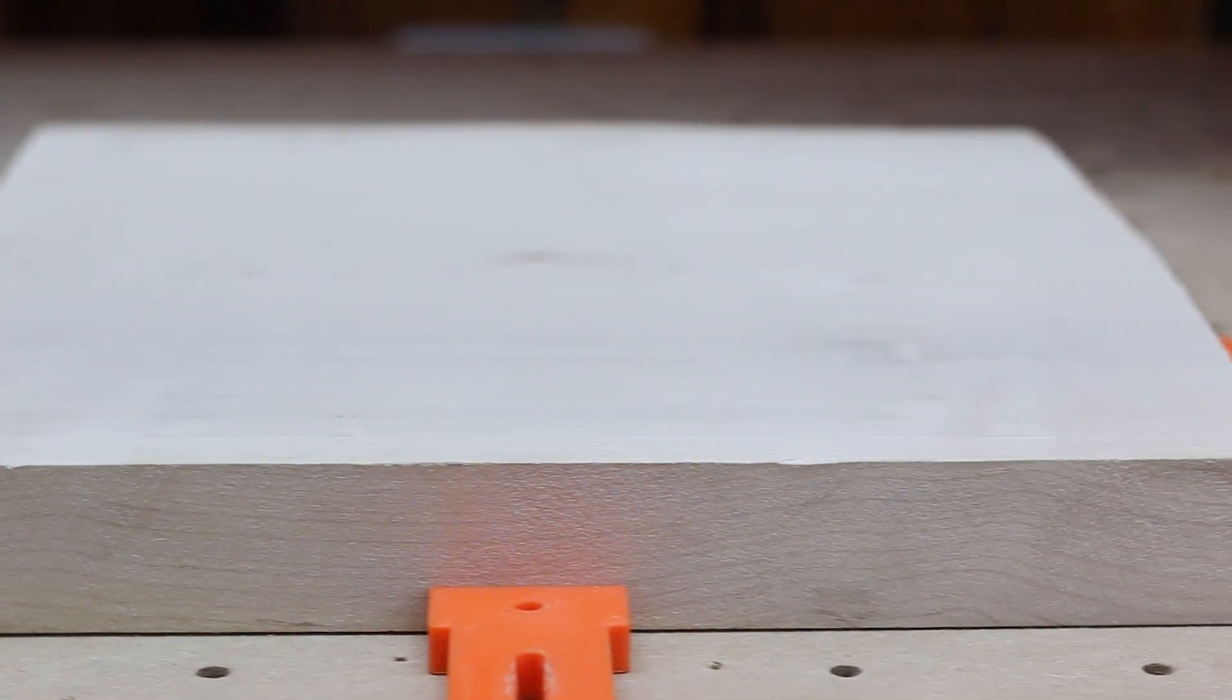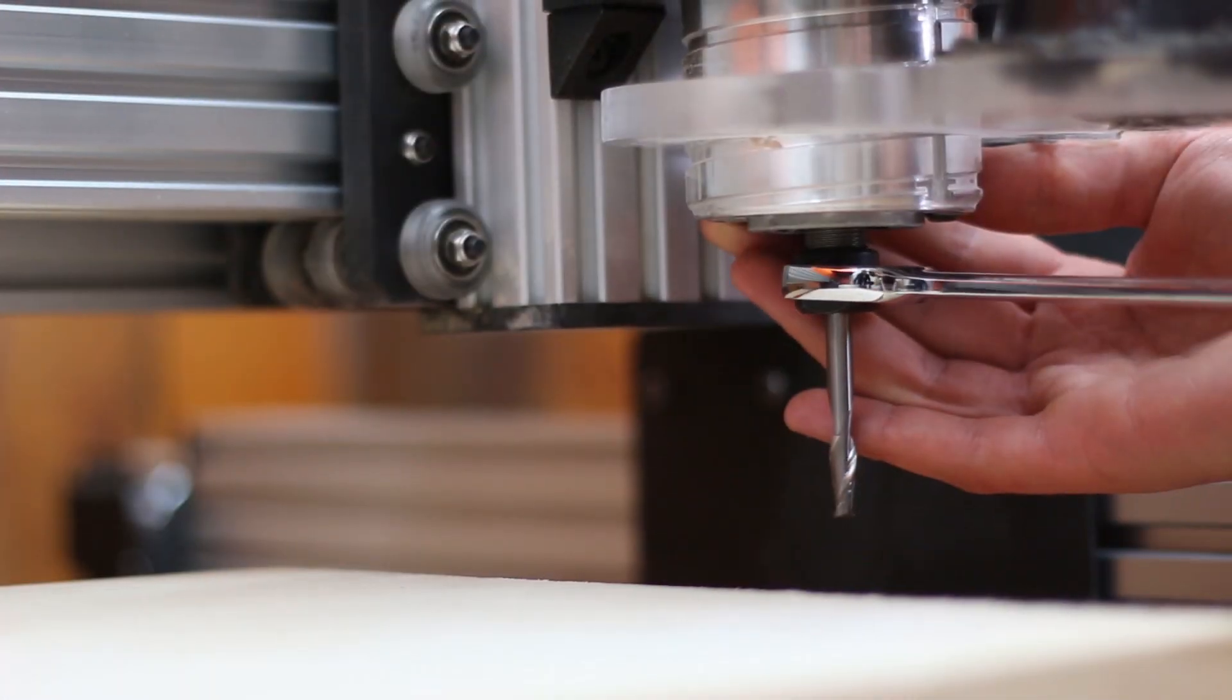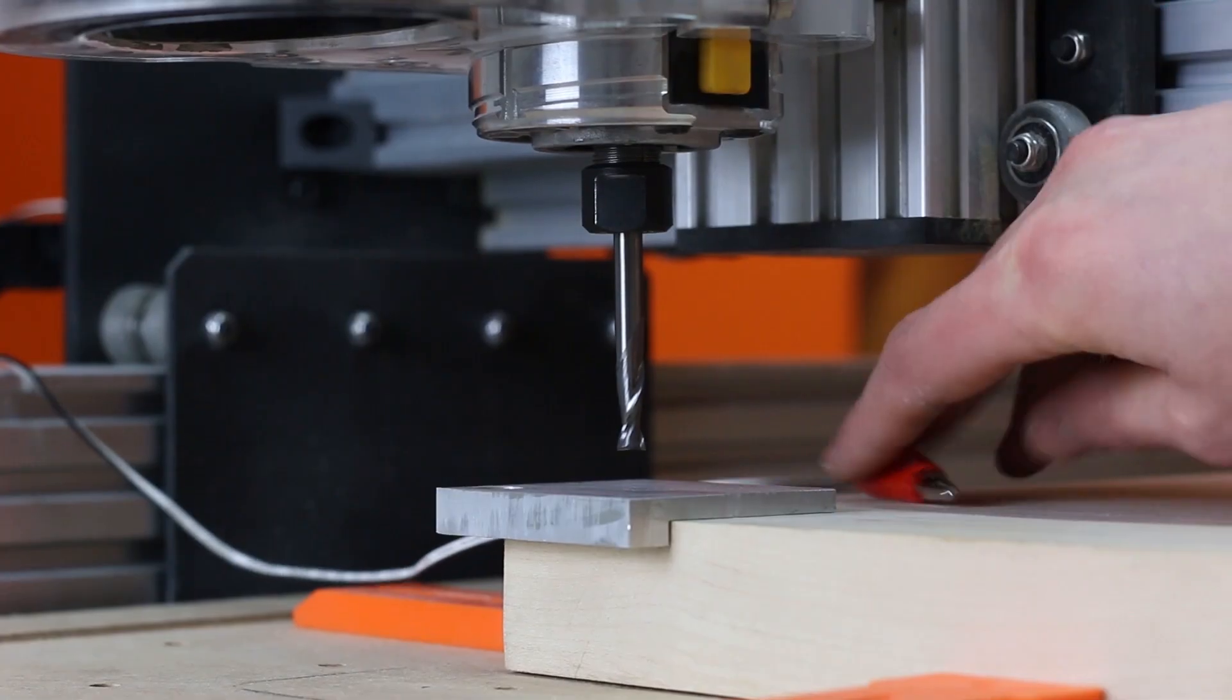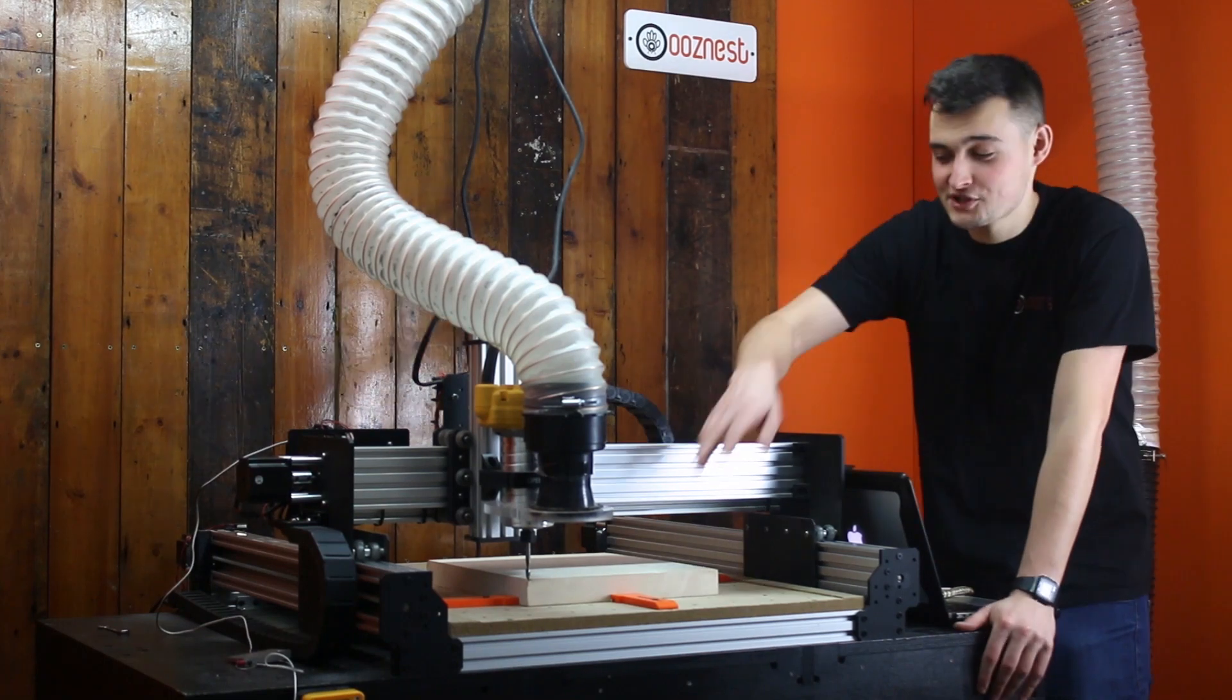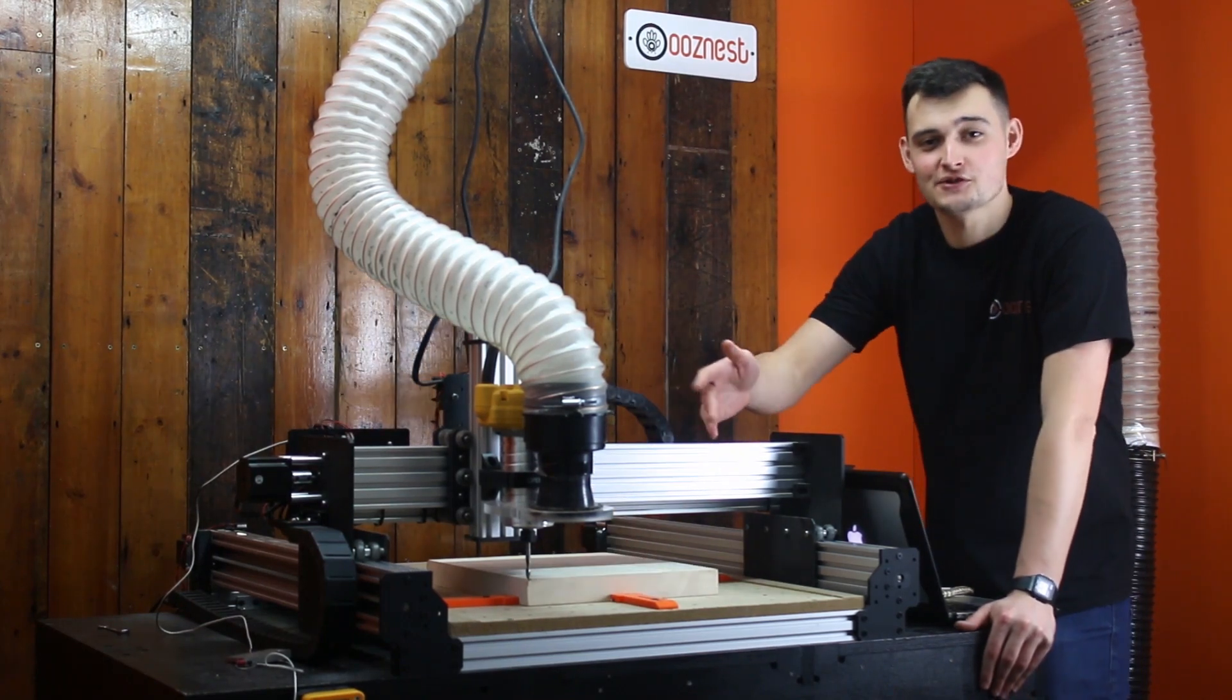The material has been planed on both sides, ready to be machined using a 6.35mm downcut bit. We're now going to use our XYZ touch probe to zero the machine. Now that I've got the machine zeroed in place, I can run our first toolpath.